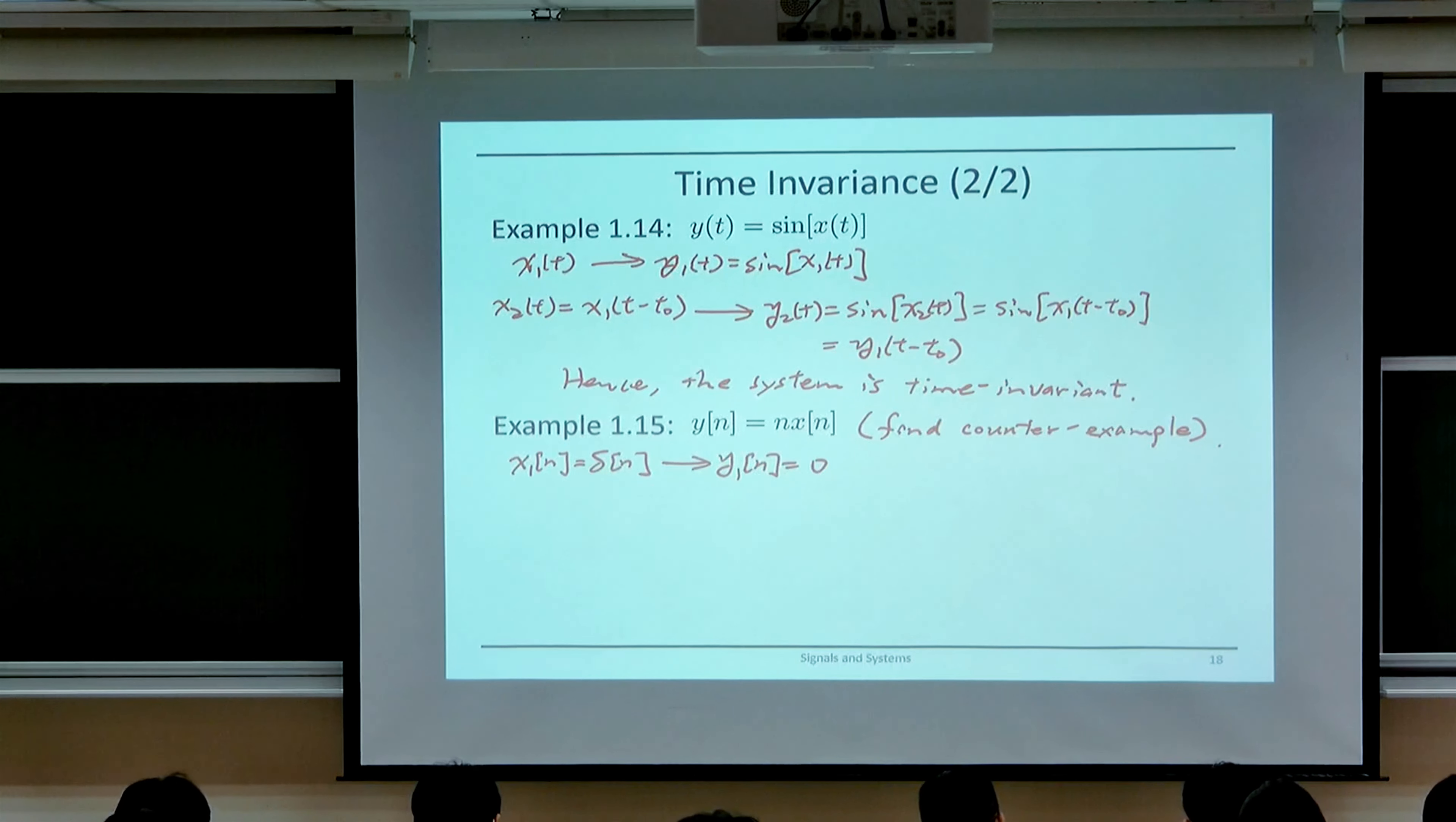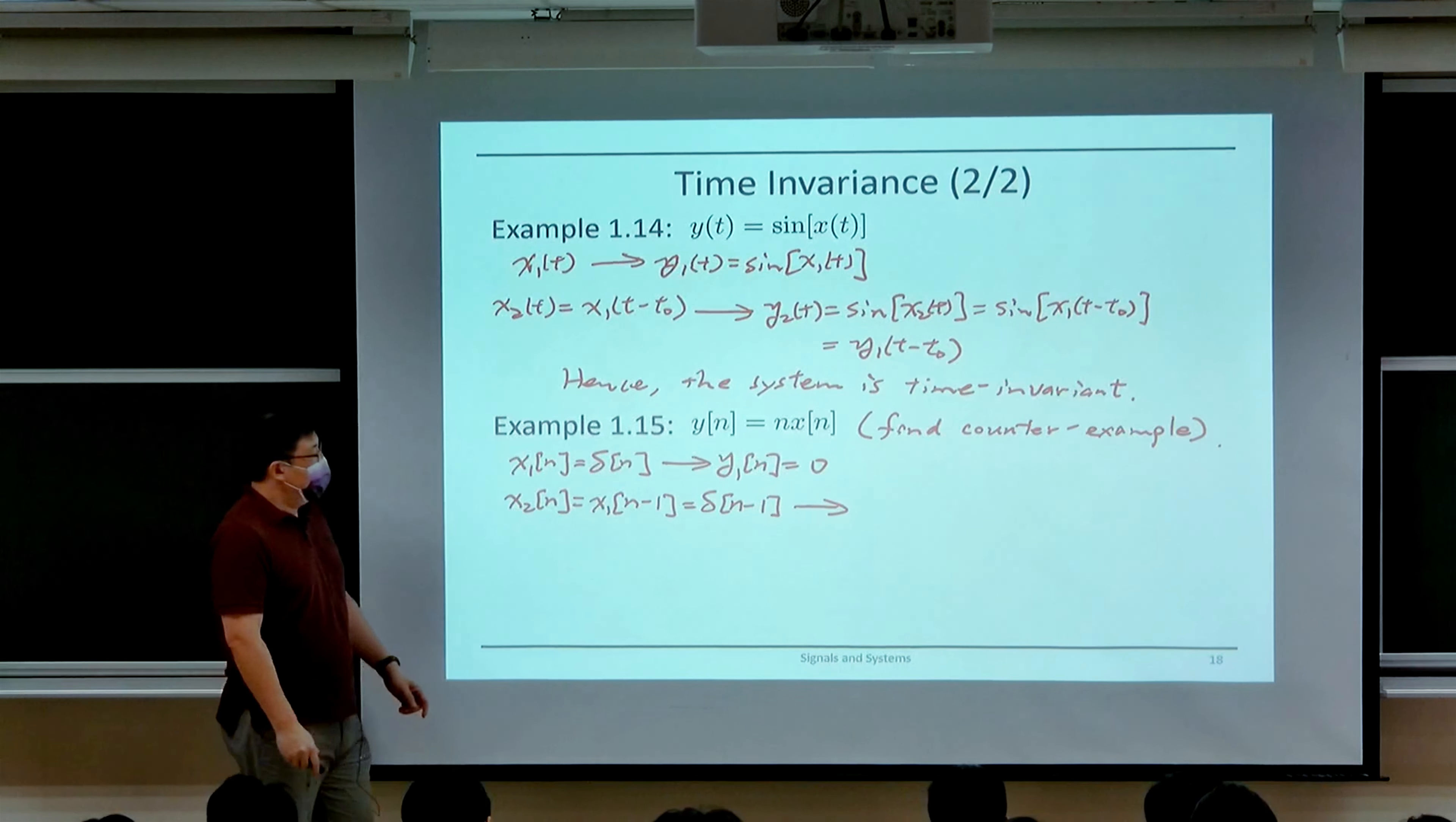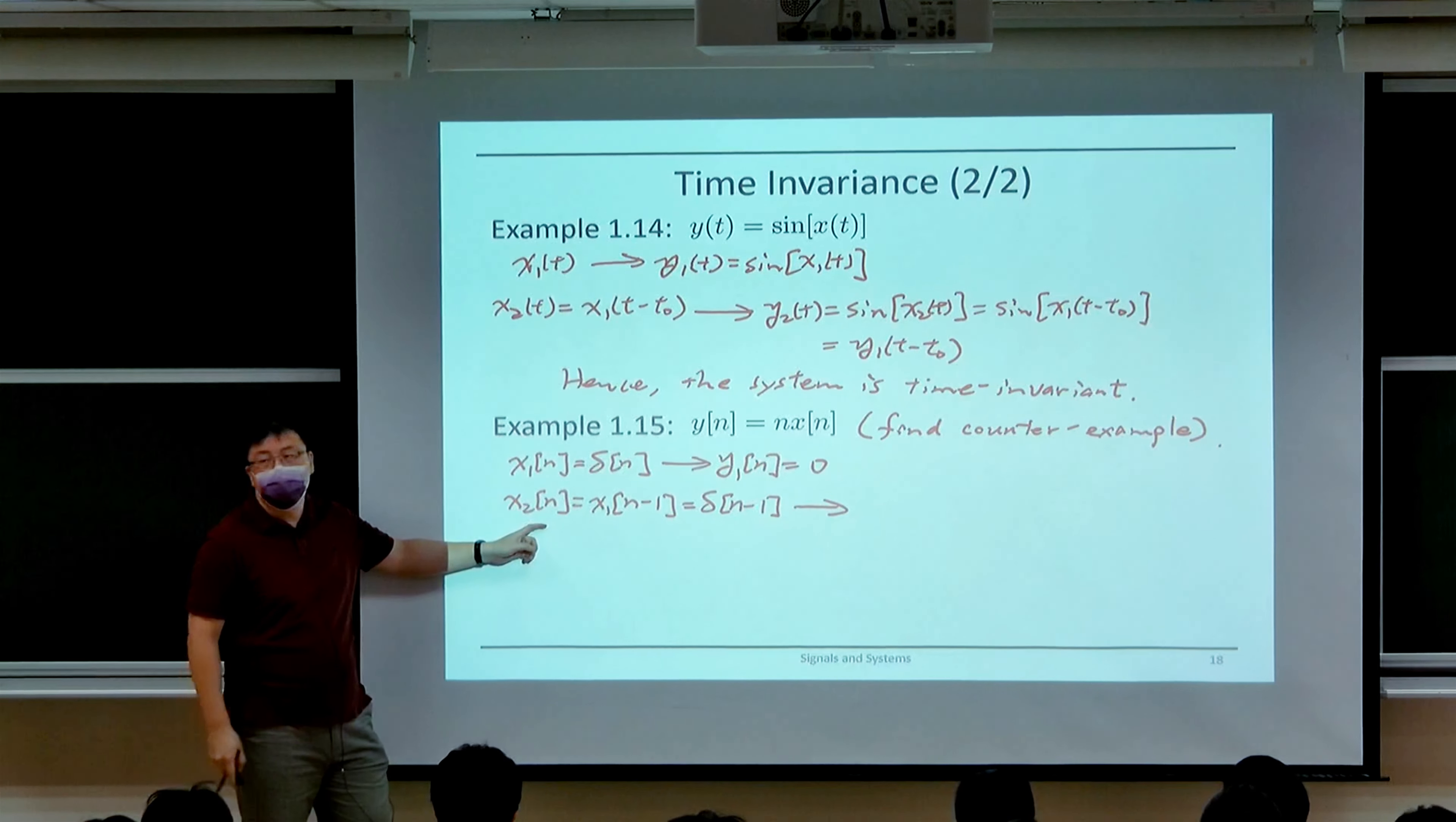Now, to show if it is time invariant, we look at what is the response to a time-shifted version of x₁. So let x₂ be a time-shifted version of x₁. Suppose we shift it by 1. And so, this is just delta of n minus 1. So here we're looking at a signal x₂ that is a time-shifted version of x₁ by 1 time unit.